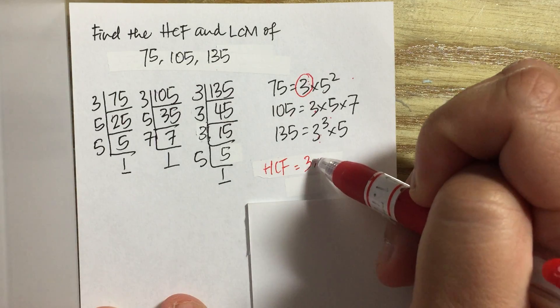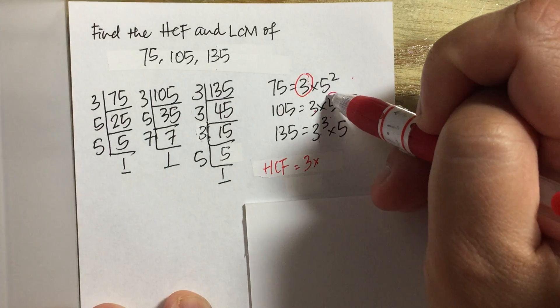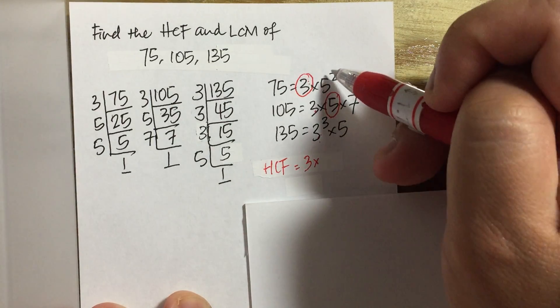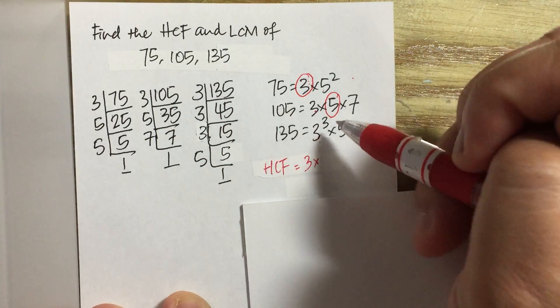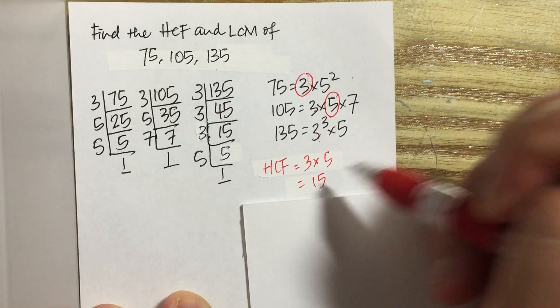Next, we have 5 squared, 5, and 5. So the highest number of fives that is common across the three numbers is a single 5. Therefore, the HCF is 15.